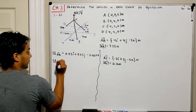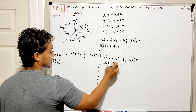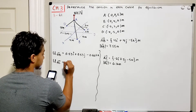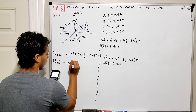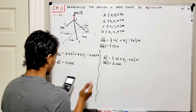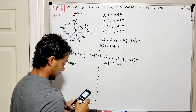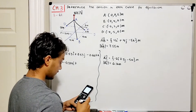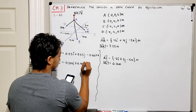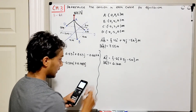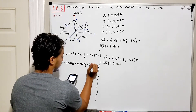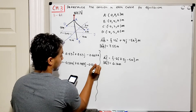For the unit vector of cable AC: negative 2/6.16 = negative 0.324 in the I direction, positive 3/6.16 = positive 0.487 in the J direction, and negative 5/6.16 = negative 0.811 in the K direction.